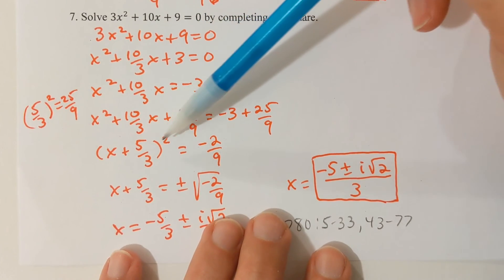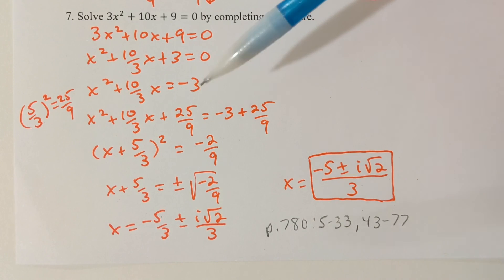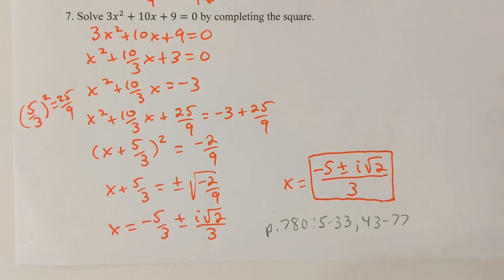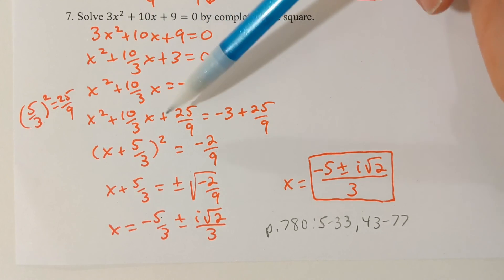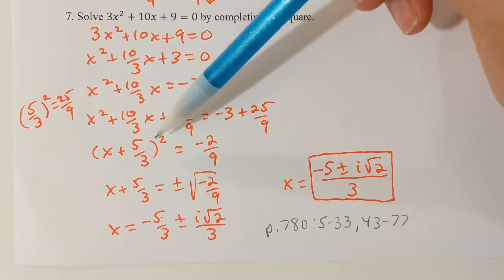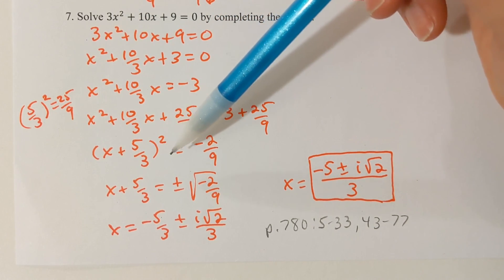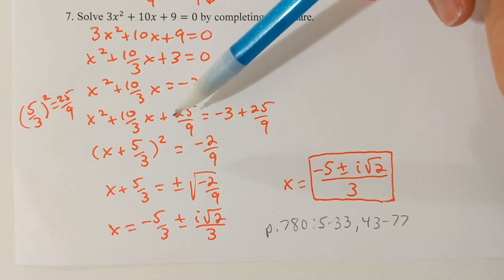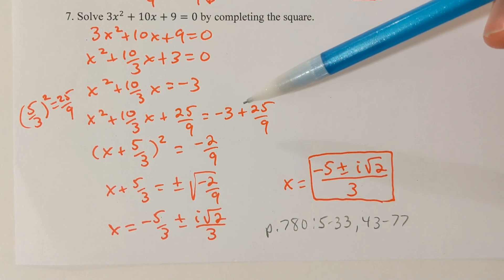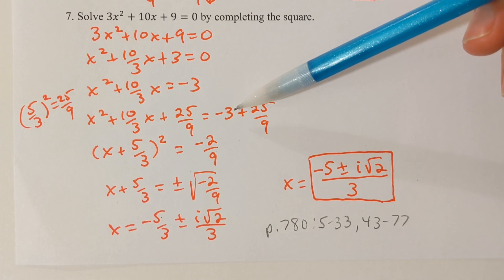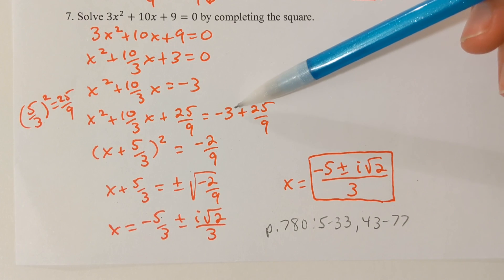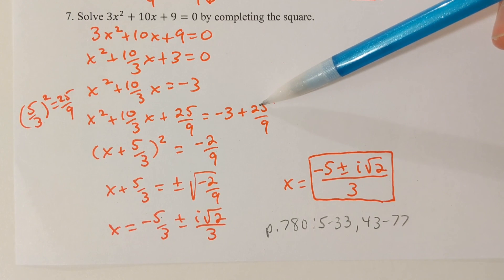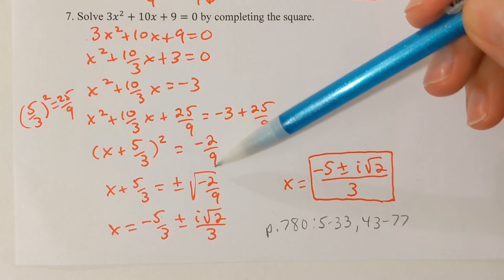The left side is always going to factor and the factors will be the same. Because I'm squaring 5/3 to get this 25/9, I know I'm going to have x + 5/3 times x + 5/3, or (x + 5/3)². On the right, negative 3 is the same as negative 27/9, and -27/9 + 25/9 = -2/9.